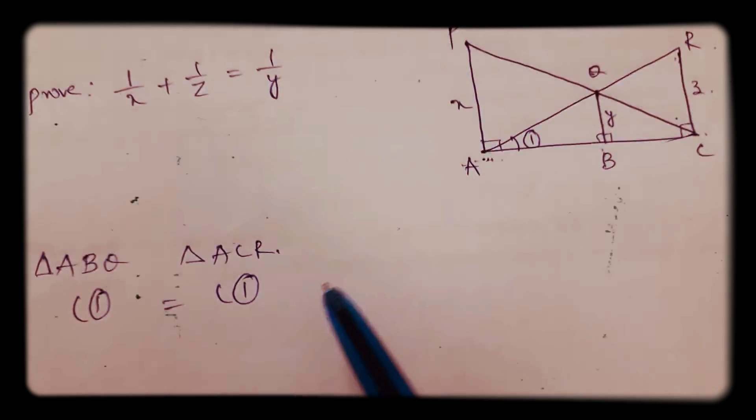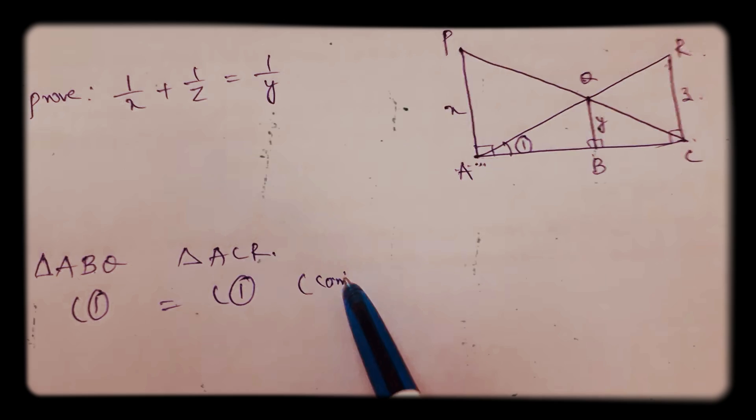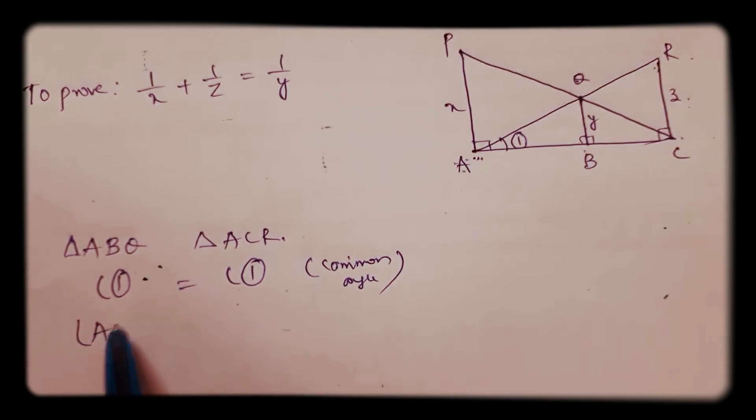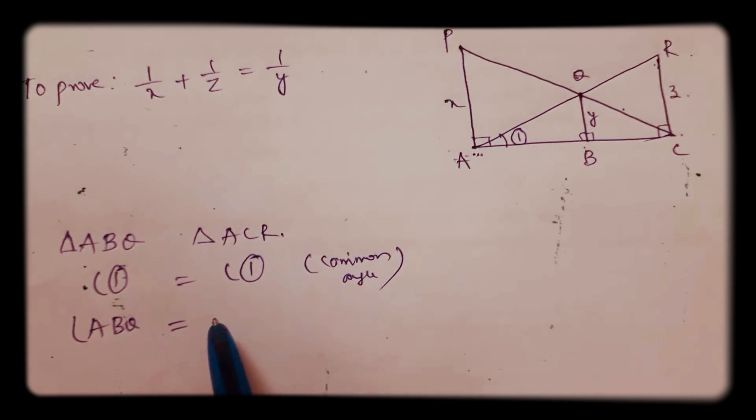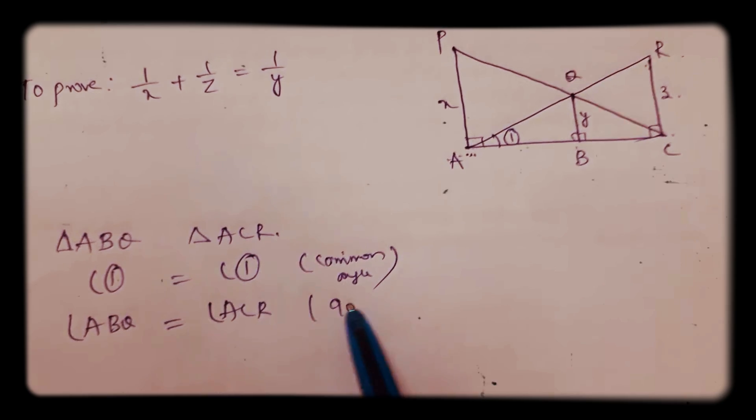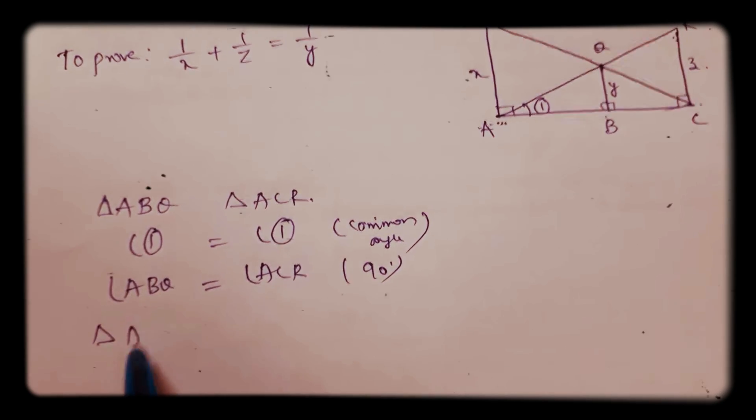Equal to angle 1, which is common angle, and angle ABQ is equal to angle ACR, 90 degrees.